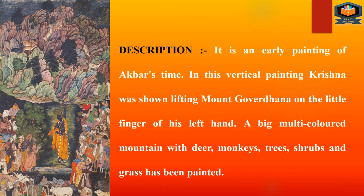Now we will discuss the features and description of this painting. It is an early painting of Akbar's time. In this vertical painting, Krishna is shown lifting Mount Govardhan on the little finger of his left hand. A big multi-colored mountain with deer, monkeys, trees, shrubs, and grass has been painted.